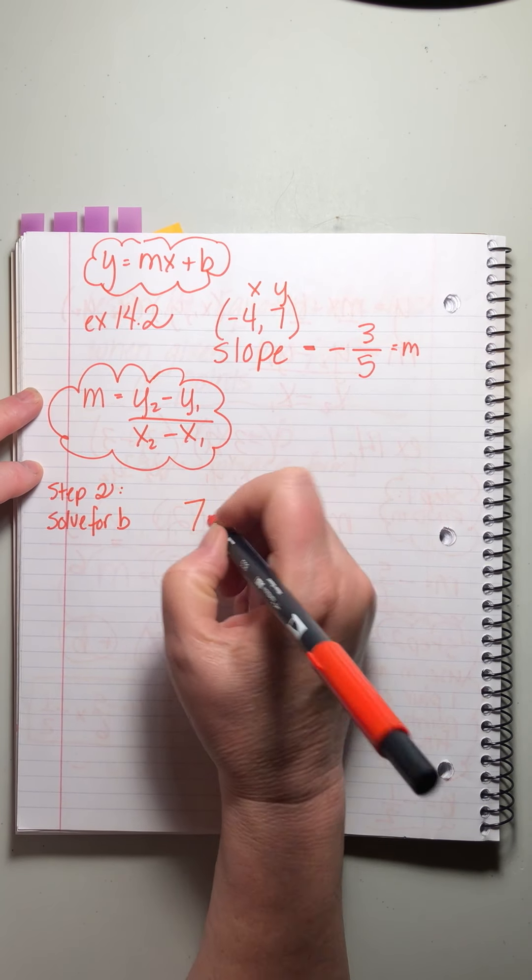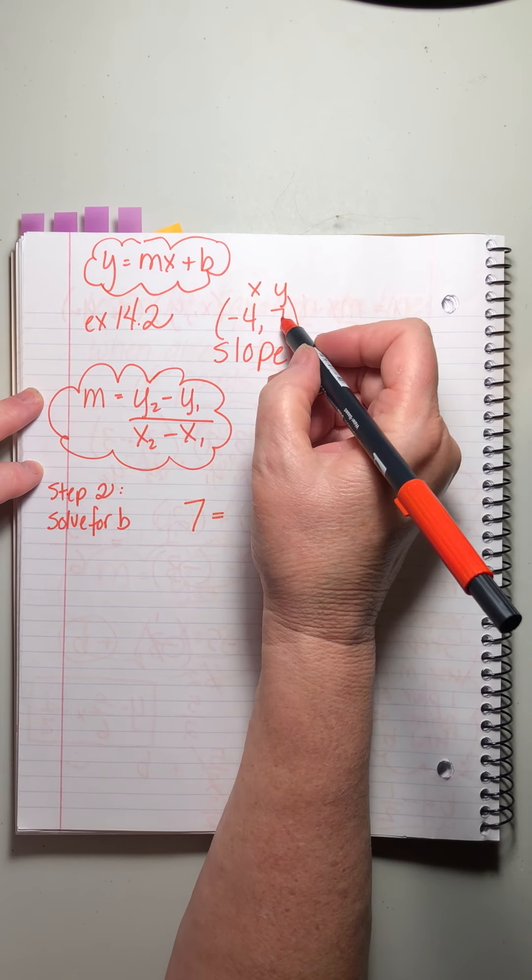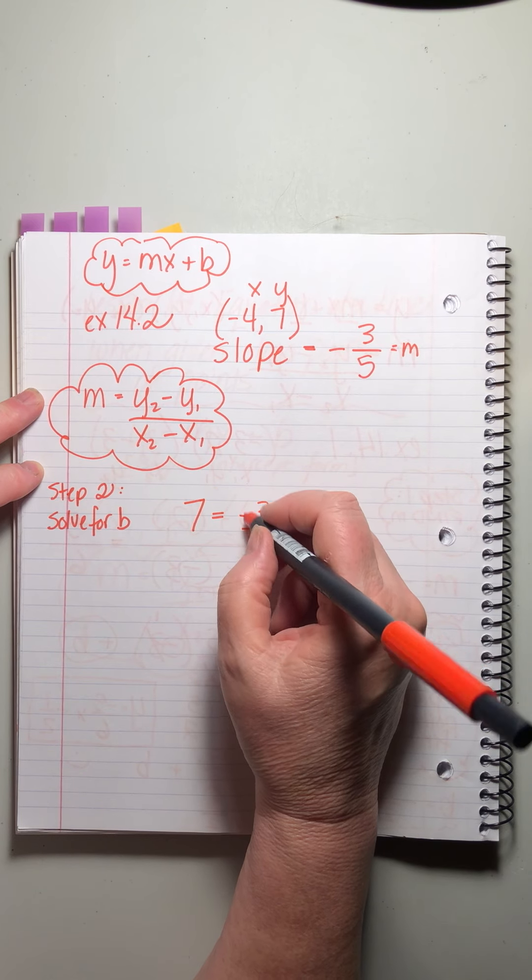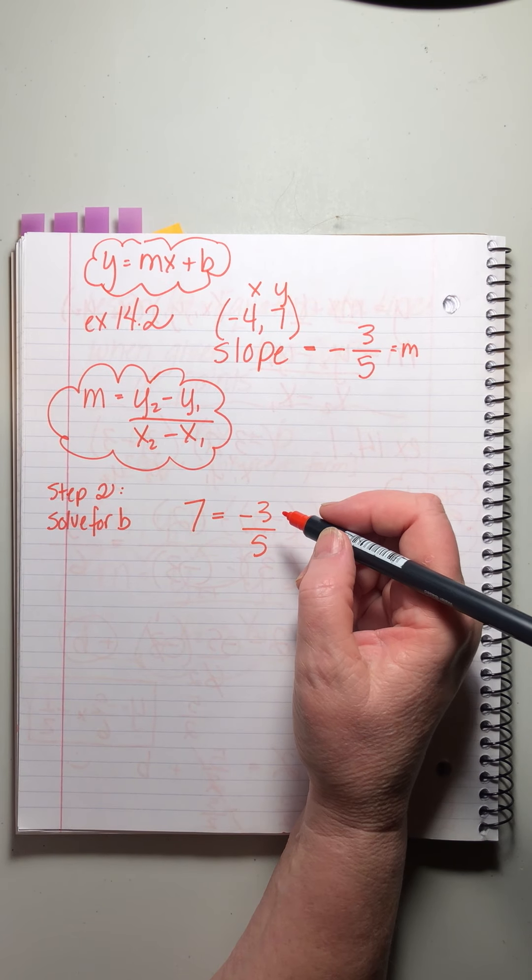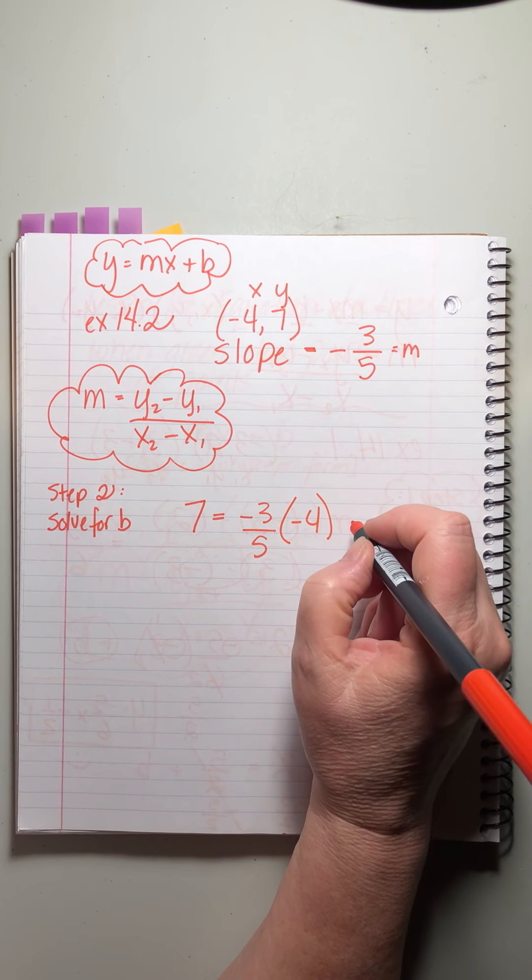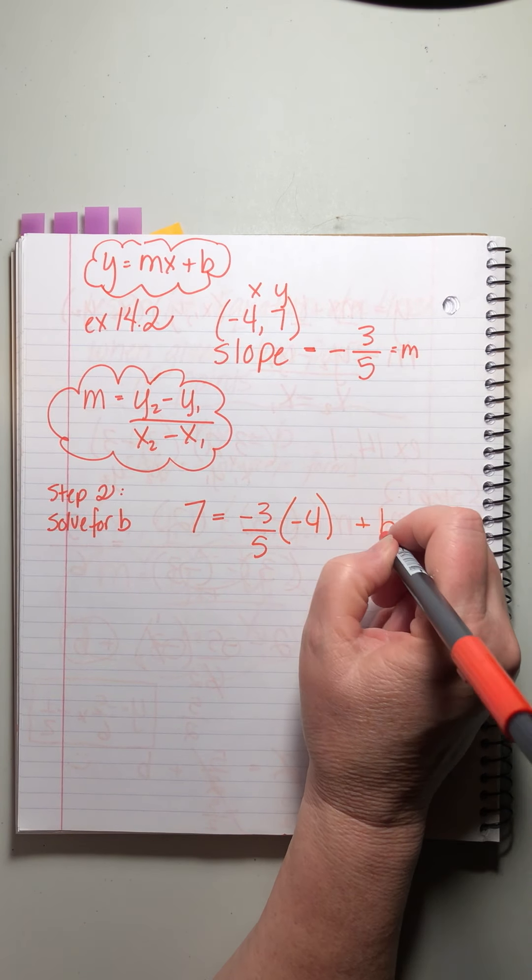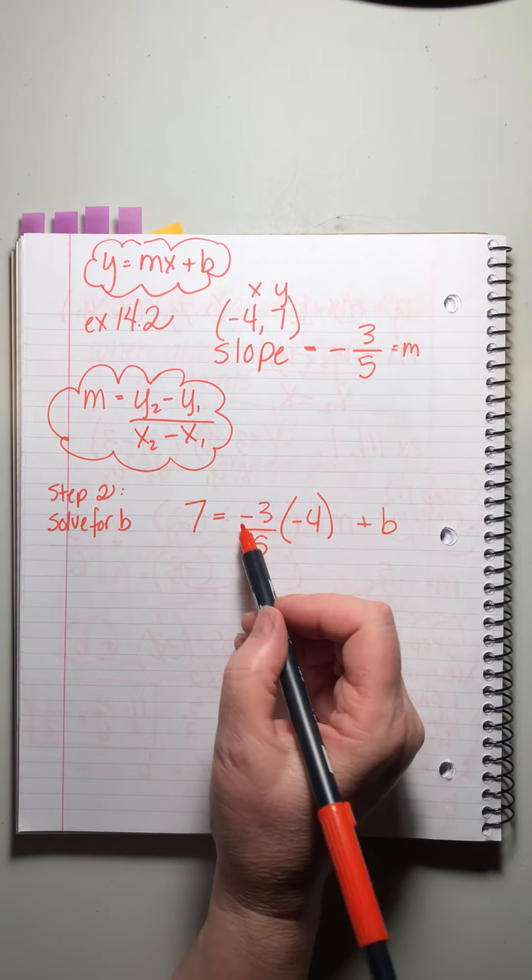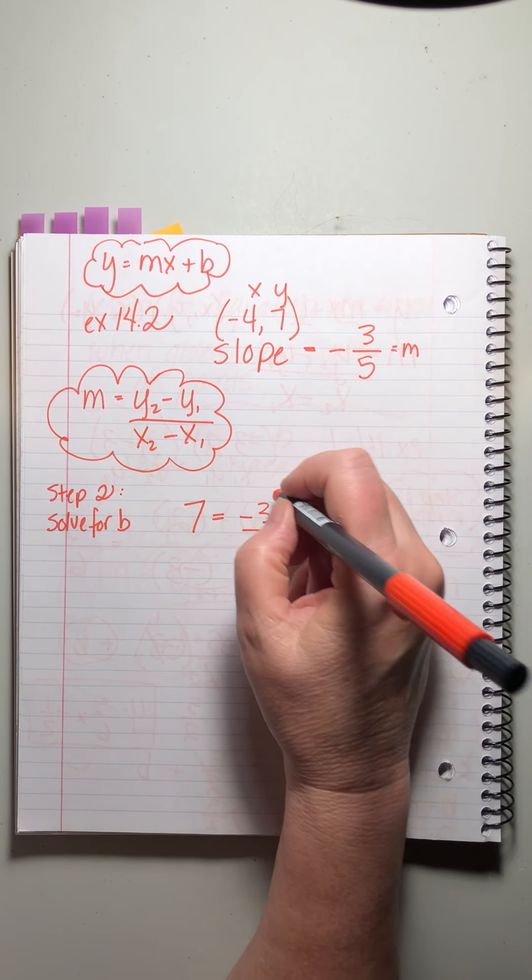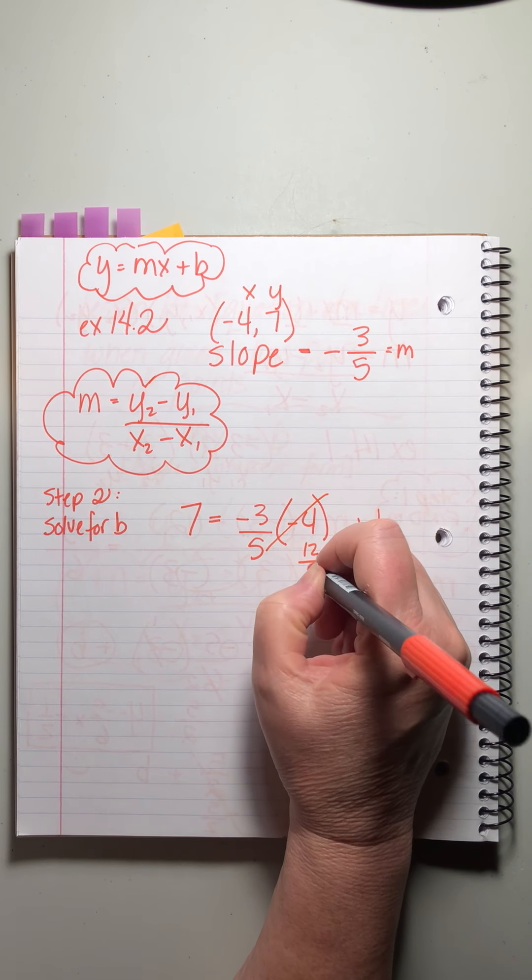So seven equals, seven is Y, M, which is minus three over five. Oh, see, sometimes I don't float it. Sometimes I write it up top. I wonder why. I don't want to do that. Times minus four plus B. Actually, I do know why I do it because now when I multiply, I'll take care of the minus sign. This becomes positive 12 over five. So I'm going to write it like that.